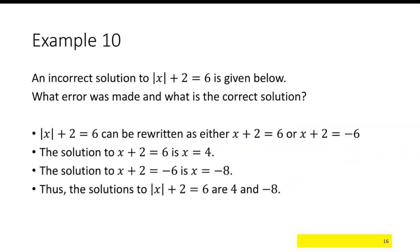One more: an incorrect solution to the absolute value of x plus 2 equals 6 is given. Where is the error and what is the correct solution? The first step they did was rewrite it as two equations: x plus 2 equals 6 and x plus 2 equals negative 6. From the first, subtracting 2 gives x equals 4. From the second, subtracting 2 gives x equals negative 8. So they claim the solutions are 4 and negative 8.